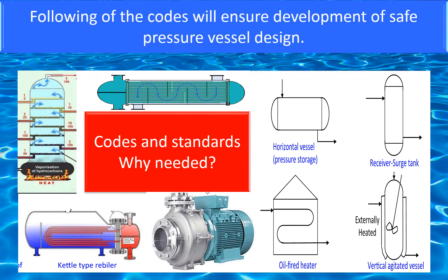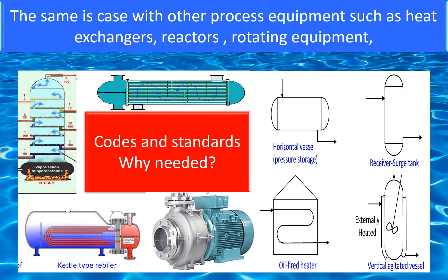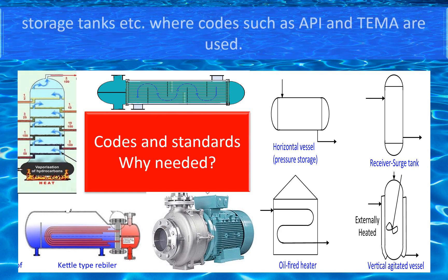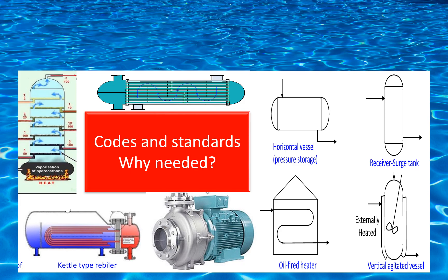Following the codes will ensure development of safe pressure vessel design. The same is the case with other process equipment such as heat exchangers, reactors, rotating equipment, and storage tanks, where codes such as API and TEMA are used.